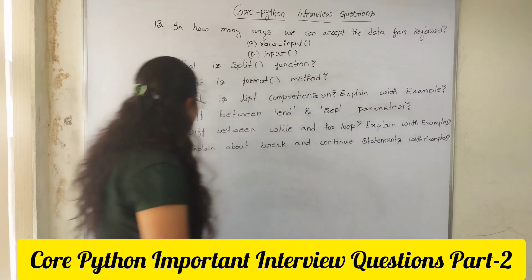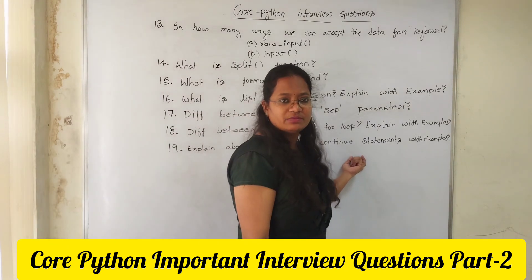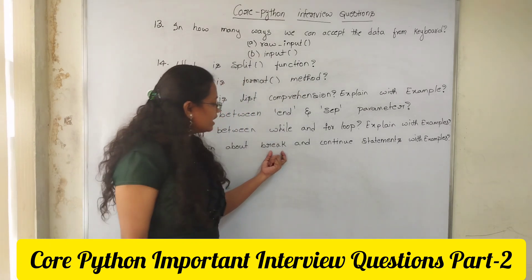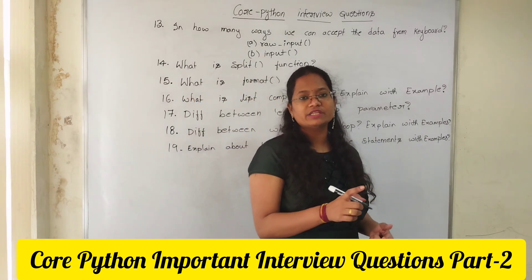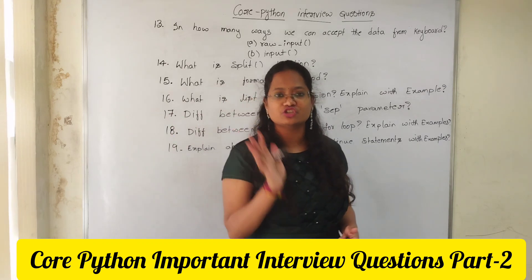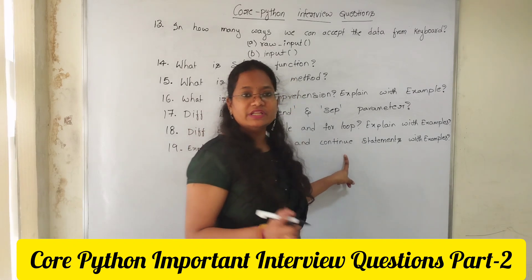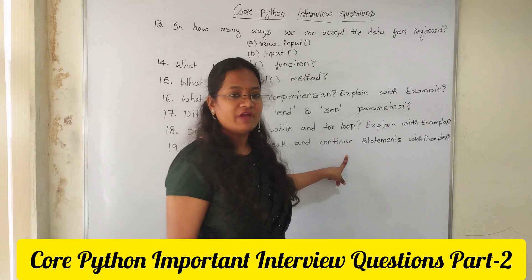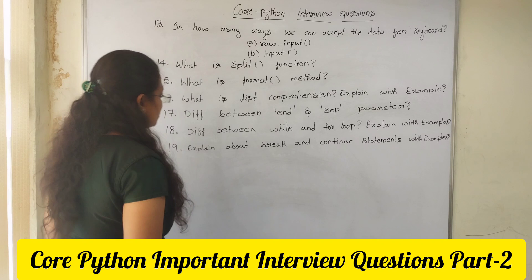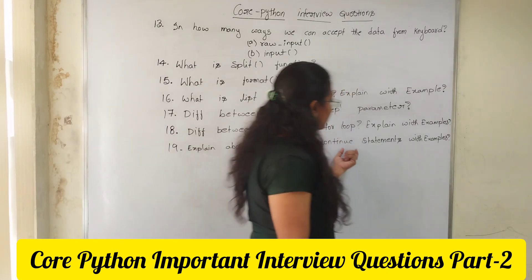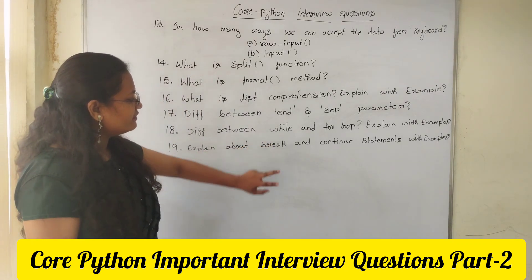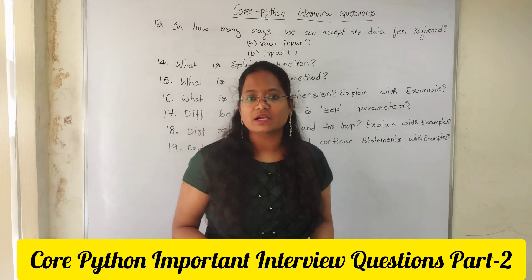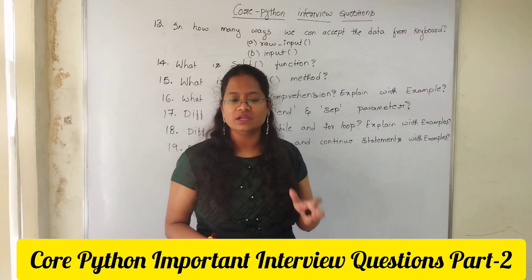Many people get confused with break and continue. Break means: if the condition is satisfied and you write a break statement, the remaining loop will not be executed — it stops execution. Continue means: if the condition is satisfied, that number will not be printed, but the remaining loop continues and executes remaining values until the condition is satisfied. You need to explain with examples. Also focus on Armstrong number, palindrome, reversing a number, pattern programs — star, alphabetic, and number patterns.